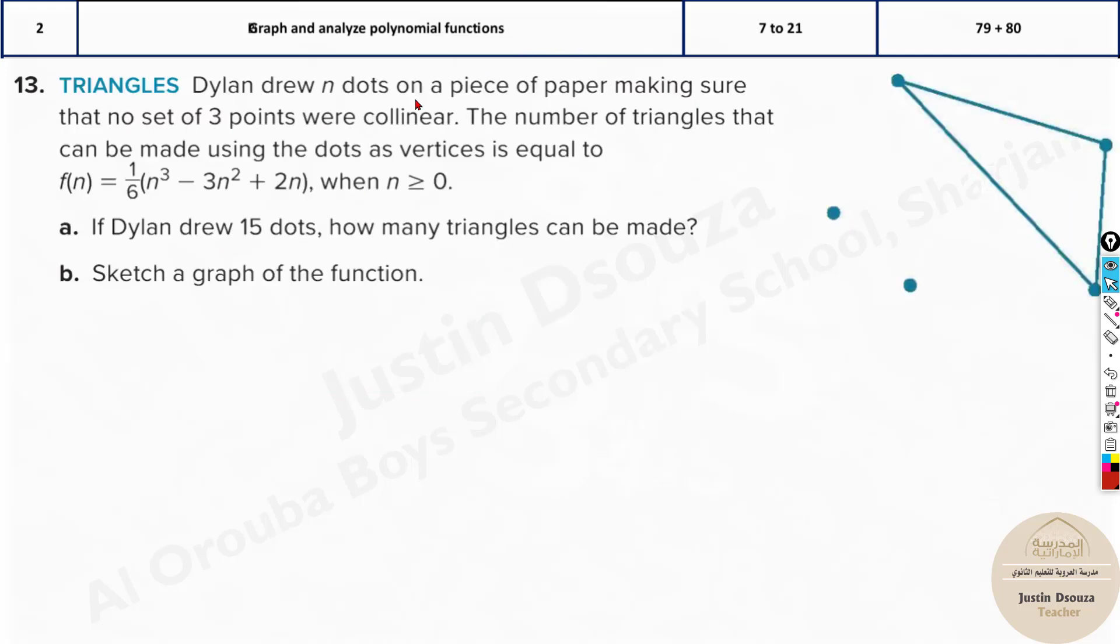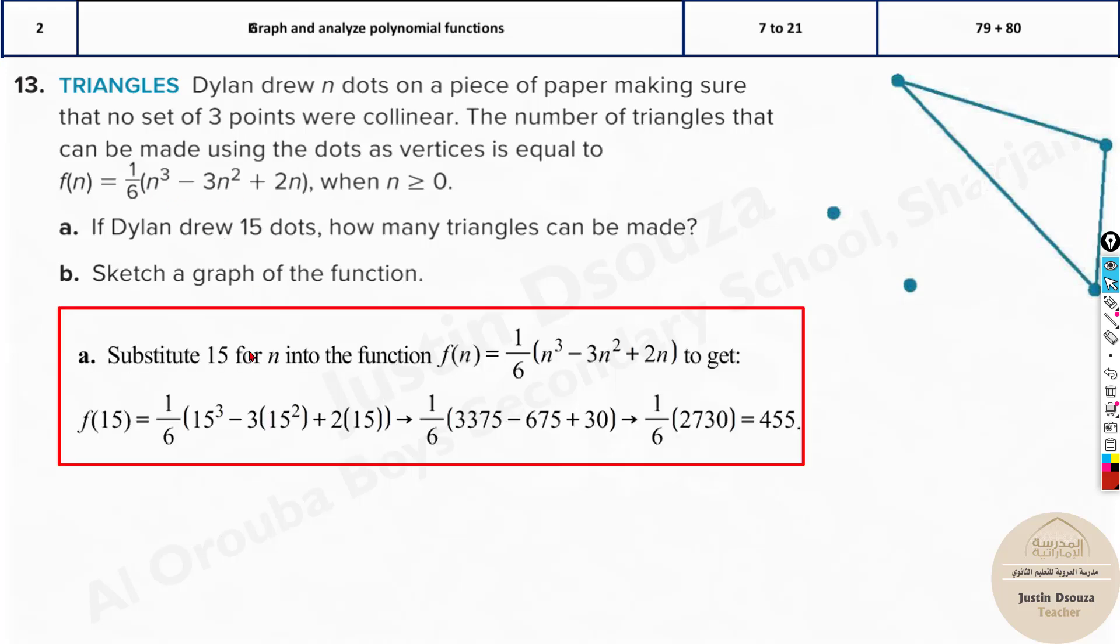Now we have a real world problem. Dillon drew n dots on a piece of paper making sure that no set of three points were collinear. The number of triangles can be made out by using the dots as vertices is equal to this function over here where n is greater than or equal to 0. So if Dillon drew 15 dots, how many triangles can be made? Here this n means number of dots, right? So you've got 15 dots. Just substitute n. Just substitute over here and solve it up. Look over here. Instead of n, you're substituting 15 because they asked for 15. The answer is 455.